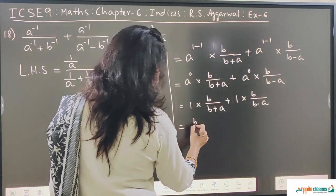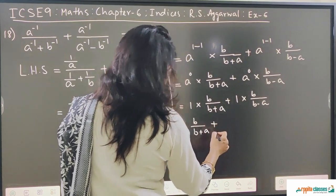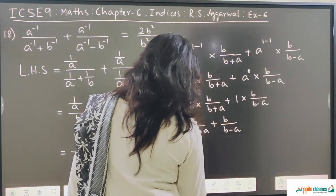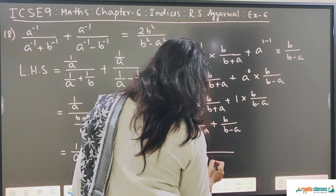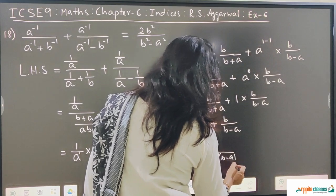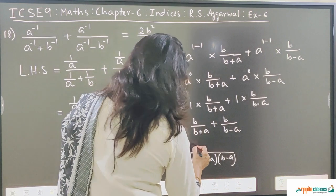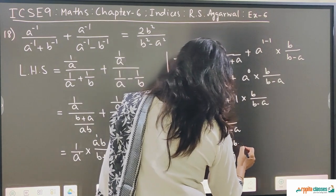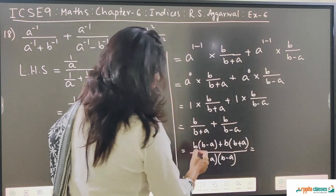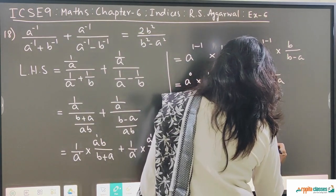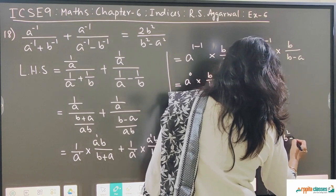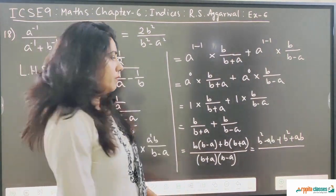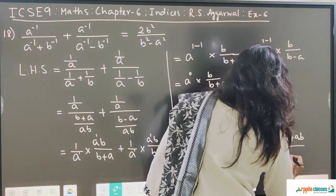So from the first term we get b upon b plus a, and from the second we get b upon b minus a. The LCM is b plus a into b minus a. So in the numerator we get b into b minus a, plus b into b plus a, giving b squared minus ab, plus b squared plus ab. Now we have the formula: b plus a into b minus a equals b squared minus a squared.